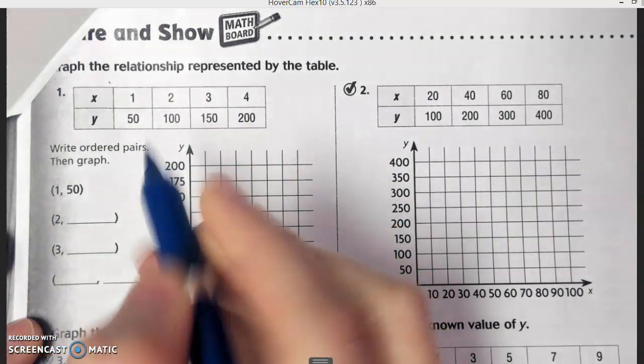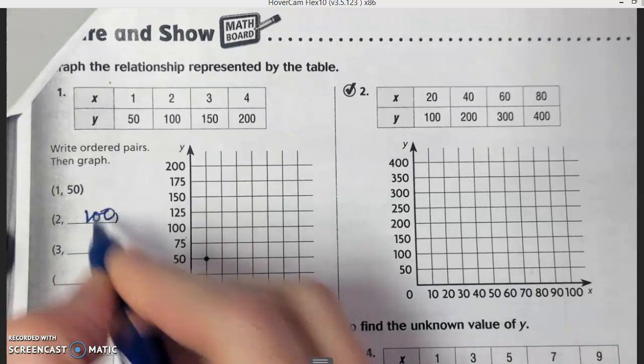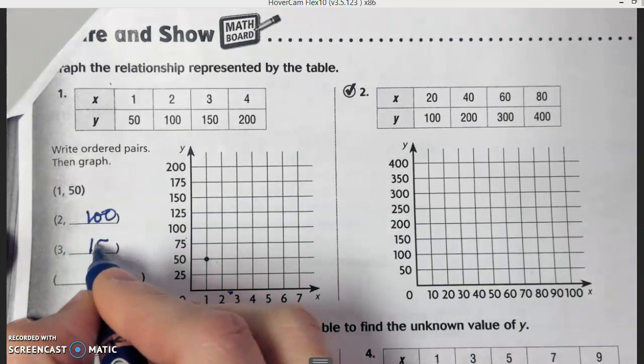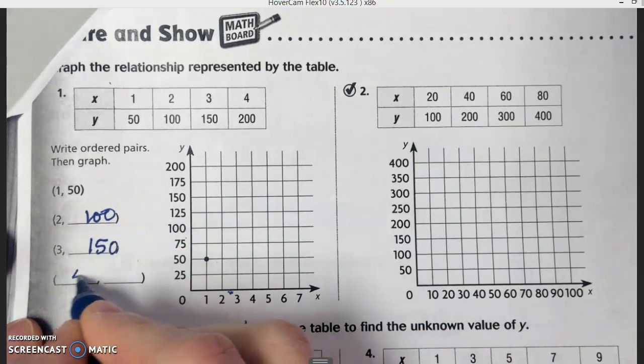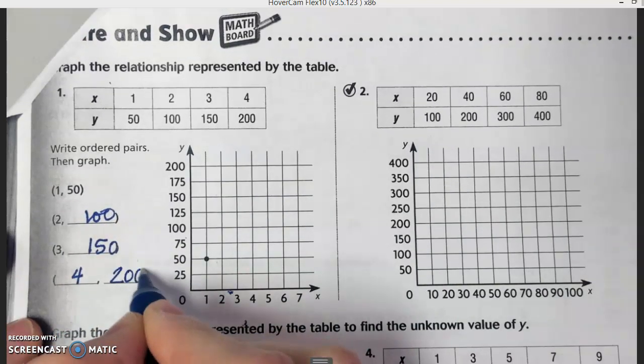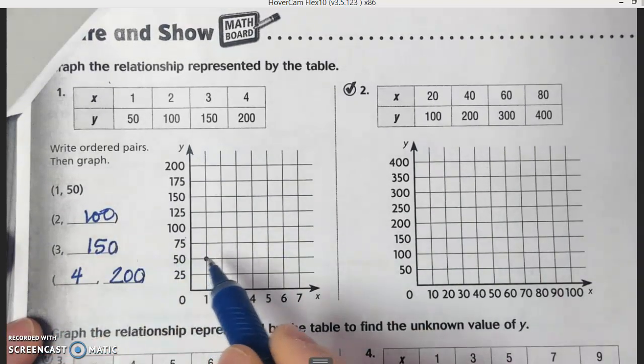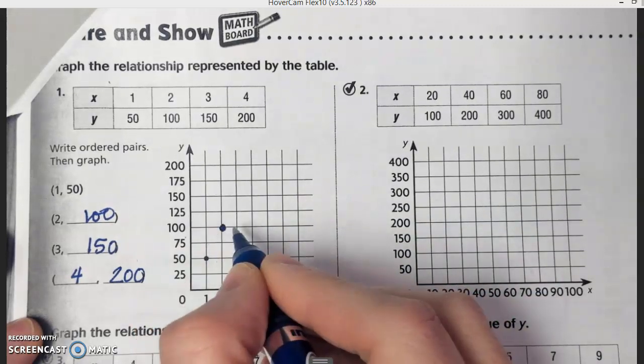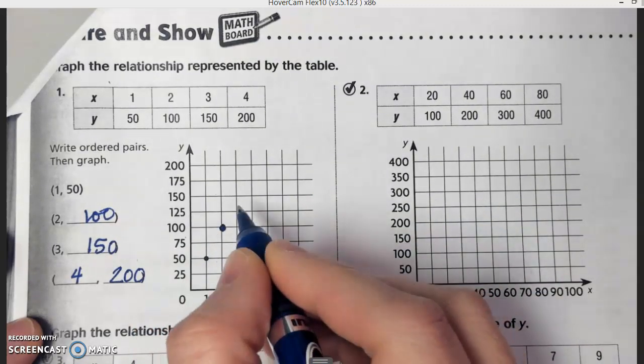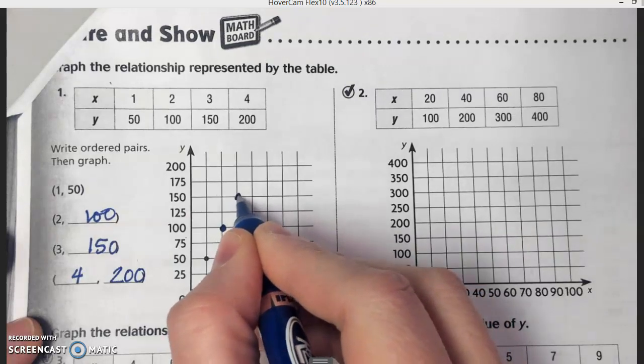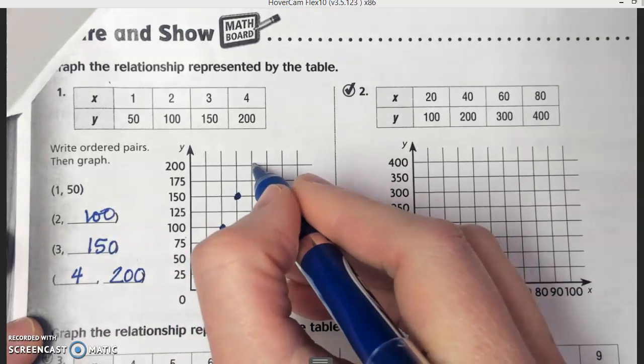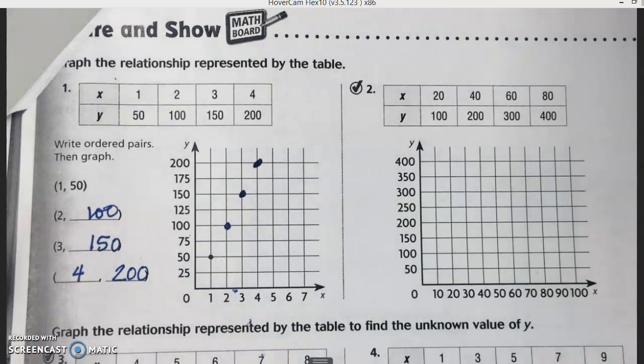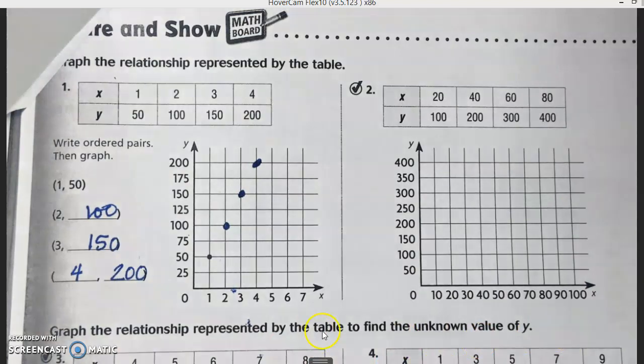We have one in 50, two in 100, three in 150, and four in 200. One in 50 is already graphed, so then two in 100, then three in 150, and then four in 200. We didn't have to find a missing number there, so we don't necessarily have to connect them.